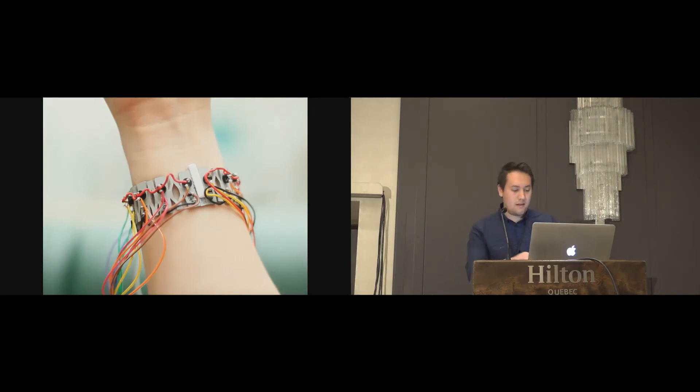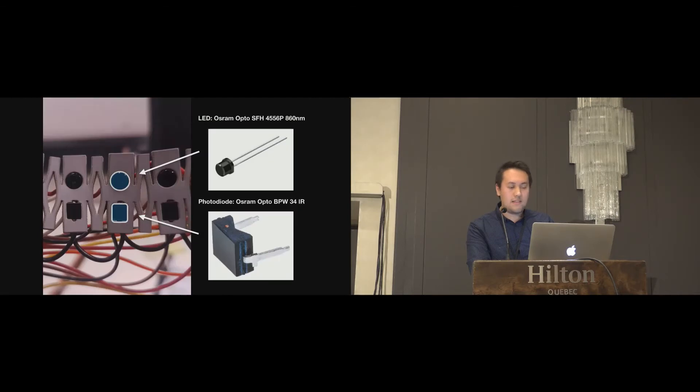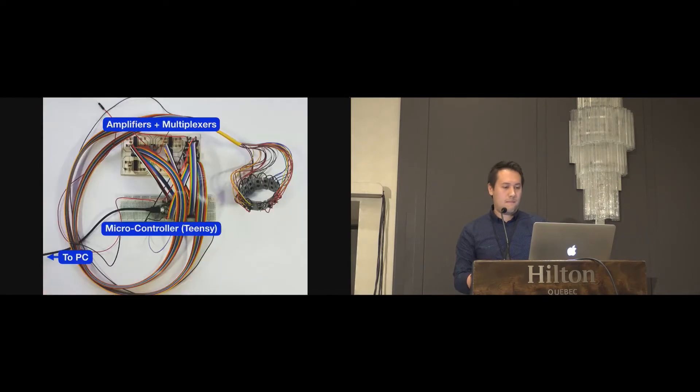Here's what our prototype looks like. There are 14 segments in total. Each segment has an LED and a photodiode with a peak sensitivity of 860 nanometers. This is all connected to a signal generation and acquisition circuit, which then relays the information back to a PC for classification.